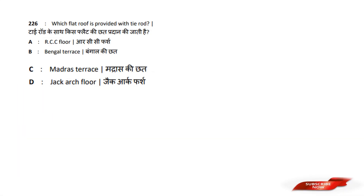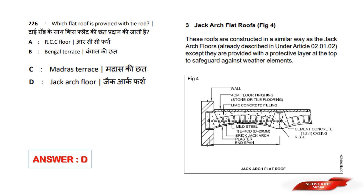Which flat roof is provided with a tie rod? Options are: A) RCC floor, B) Bengal Terrace, C) Madras Terrace, D) Jack Arch floor. Answer option D — Jack Arch floor.